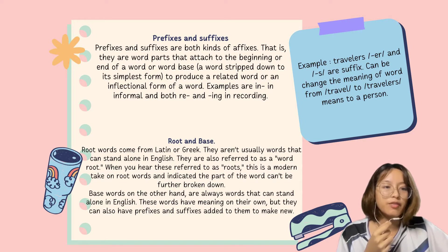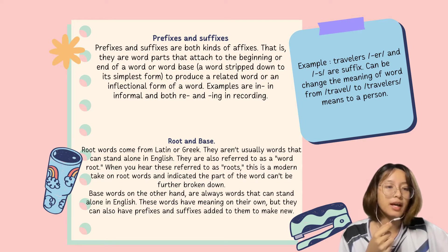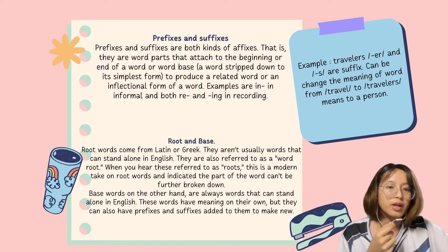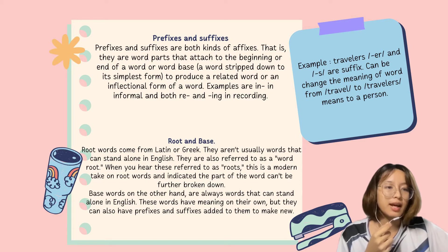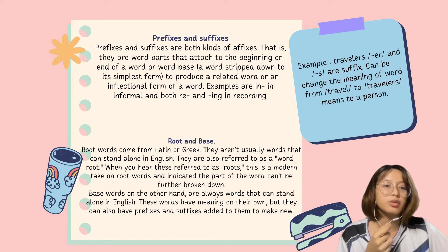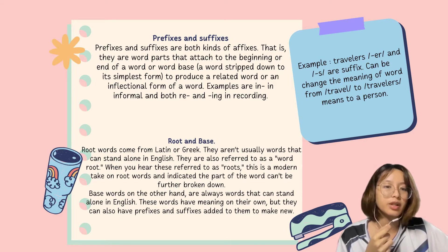For example, informal and recording. Informal has the prefix 'in.' Recording has the prefix and suffix 're' and 'ing.' Root words come from Latin or Greek. They are usually words that can't stand alone in English, and are also referred to as word root-based words.